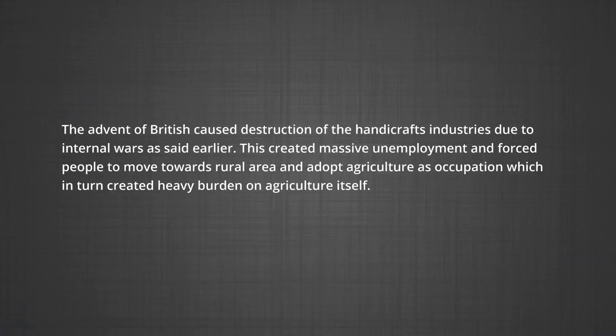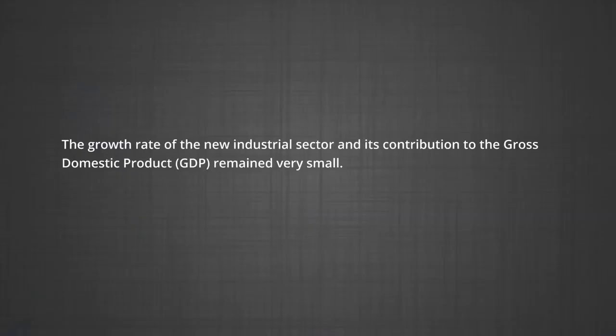The most significant development took place in the beginning of the 20th century when the Tata Iron and Steel Company (TISCO) was incorporated in 1907. A few other industries in the fields of sugar, cement, paper, etc. also came up after the Second World War. However, there was hardly any capital goods industry such as manufacturing of machine tools to help promote further industrialization in India. So, like agriculture, India did not do well to develop its industrial base.